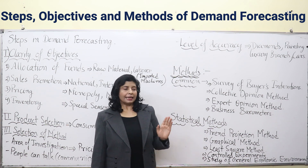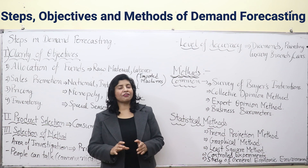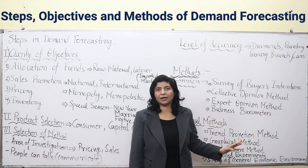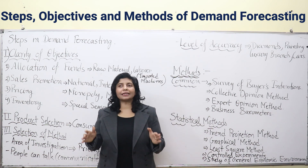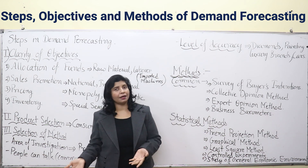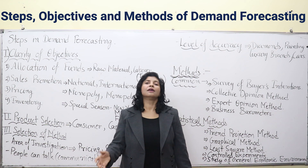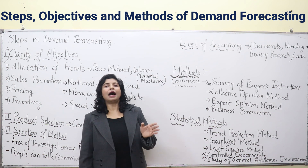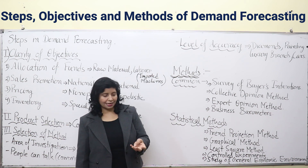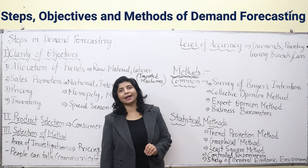Then we have the expert opinion method. In this method, experts are contacted, asked questions regarding the resultant tendencies of the economy and demand trends, and then inferences are drawn for forecasting. This method will be explained in detail in another video. Then there are business parameters — certain variables in the economy that tell you what the trend of demand will be in the coming future. For example, if people lose their jobs, demand will be dampened as they have lesser or no income. During COVID-19, people lost jobs and demand for most commodities like cars, houses, and luxury brands fell, while only demand for medicines increased.